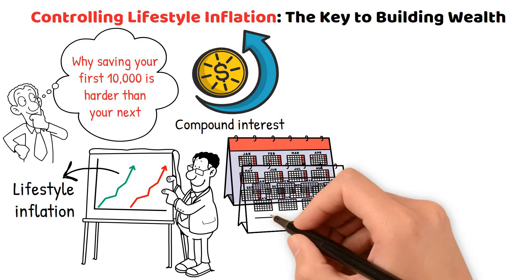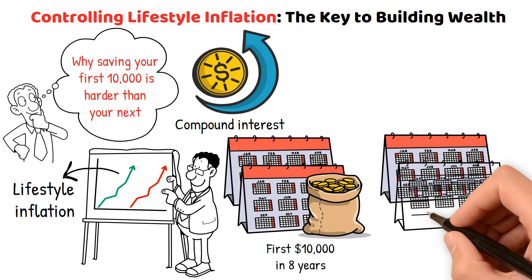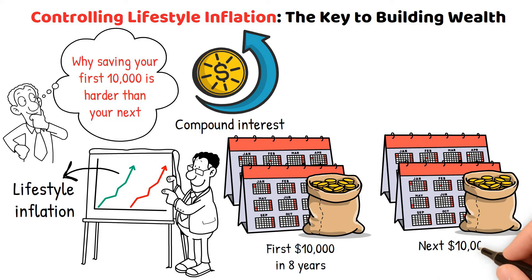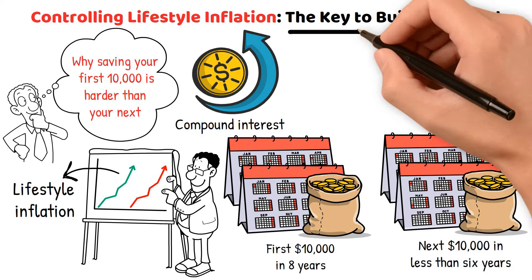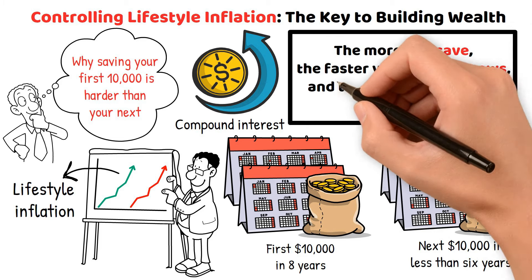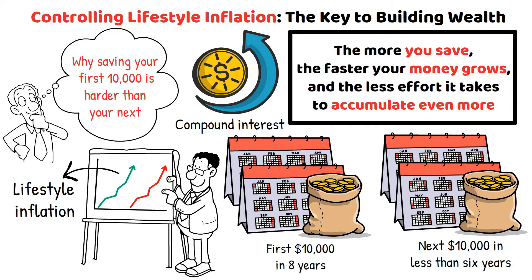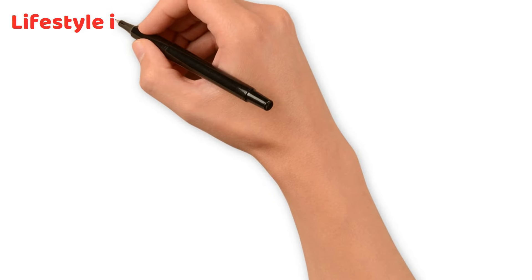For example, it might take you just over 8 years to save your first $10,000, but reaching your next $10,000 could take you less than 6 years, about 30% less time. And as your savings grow, this acceleration only continues. The more you save, the faster your money grows, and the less effort it takes to accumulate even more. But here's something you need to be mindful of.